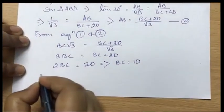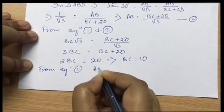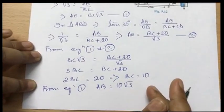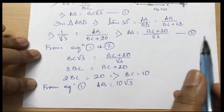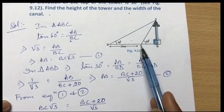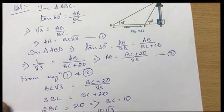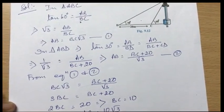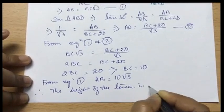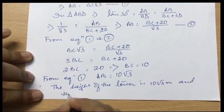Now from equation 1, AB equals BC times root 3, so AB equals 10 root 3. Hence the height of the tower is 10 root 3 meters and the width of the canal is BC, which is 10 meters.